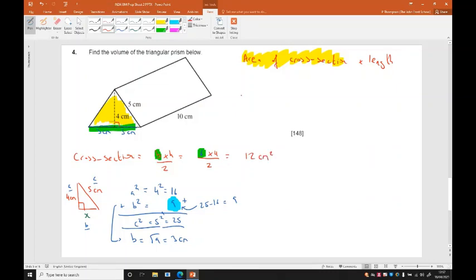6 times 4 divided by 2 is 12 cm². So the volume is going to be 12 cm² for the cross-section. I multiply by the length, which is 10. So that's 12 cm² times 10 centimeters, and if you work that out you get 120 cm³. Remember, volume is always in cubic units.